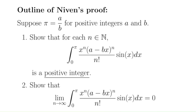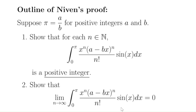Now, this second step is actually very simple — it's almost obvious. The reason it's true is because this N factorial is going to overpower everything else in the integral as N gets large. N factorial just grows much faster than everything else here. So step two is going to be easy, and the main part of the proof is going to be to show that this integral is a positive integer for every N.